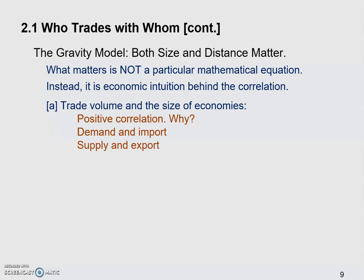Supply means in the large economies, they tend to have more people, more productive resources, and more productive capabilities. If they produced more than what their domestic demand or domestic customers demand, then they will export to the rest of the world. That's why larger economies tend to trade more with each other.